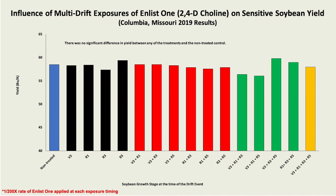We also conducted a multi-exposure study to 2,4-D — specifically the Enlist product, the 2,4-D choline product — again funded by the United Soybean Board, a multi-state study. We're only in the second year of the trial, so we only have results from our location last year. What you can see on the screen is that, in a nutshell, none of these treatments caused any significant difference in yield loss compared to the non-treated control, regardless of how many exposures of Enlist One occurred — even going as many as three or four applications. This backs up the fact that soybeans are able to tolerate quite a bit of 2,4-D.